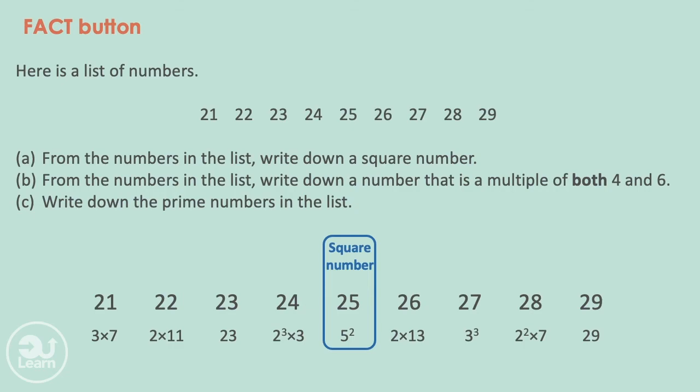The second part is straightforward. It's asking which numbers are in both the 4 and 6 times tables. 24 is the only number from that list. And finally, we know a prime number only has two factors, one and itself. And out of these numbers, there are only two that match that description.